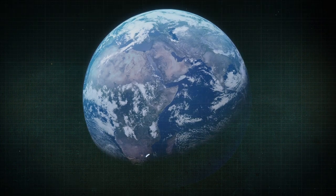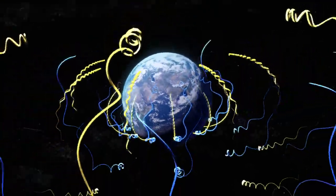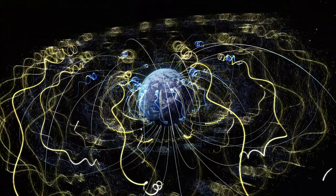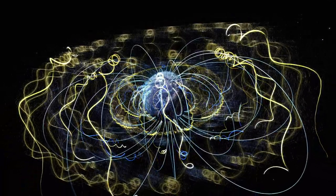Close to Earth and throughout the universe, space is far from empty. It contains electrons and ions, and most importantly, magnetic fields. This dynamic environment is unlike anything we experience on the ground.